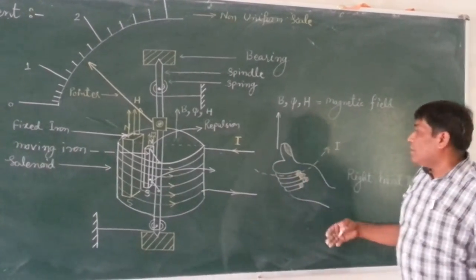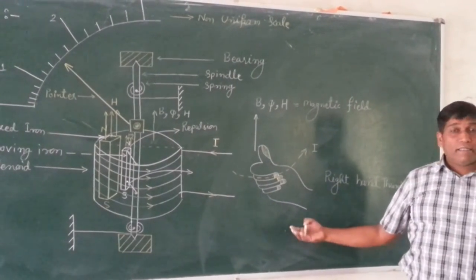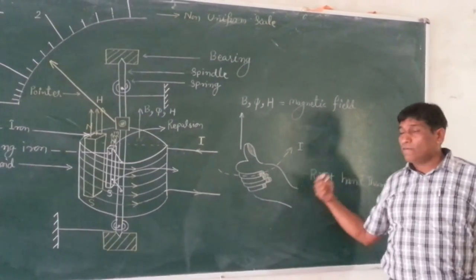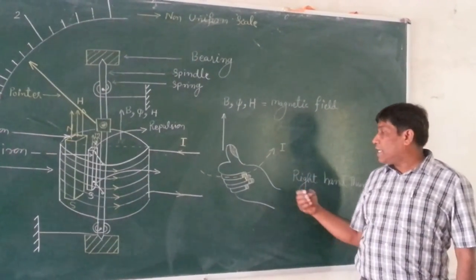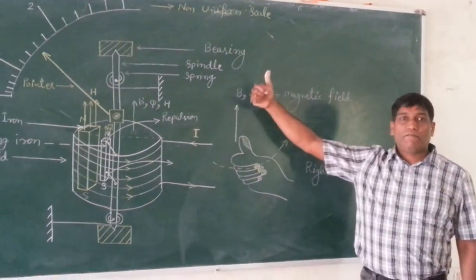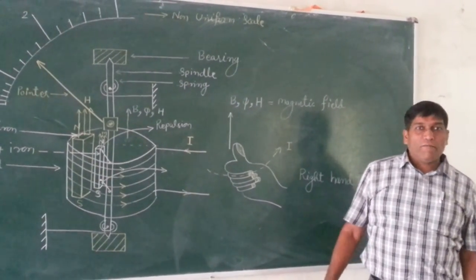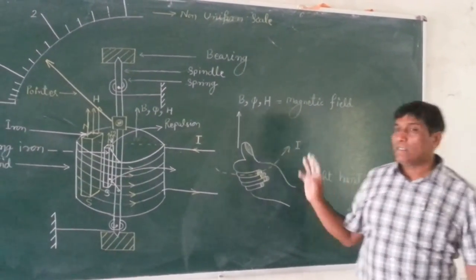If we are now understanding it from the right hand thumb rule, if this is the direction of current, according to right hand thumb rule, this is the direction of magnetic flux density, magnetic flux, magnetic field intensity.